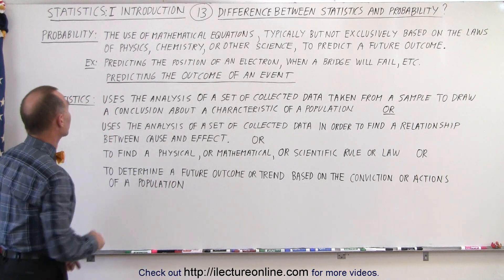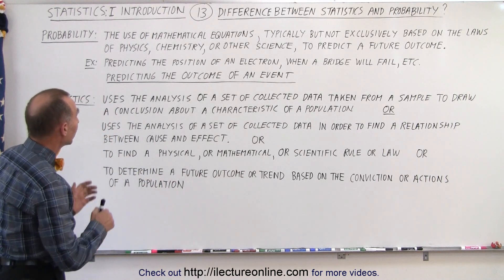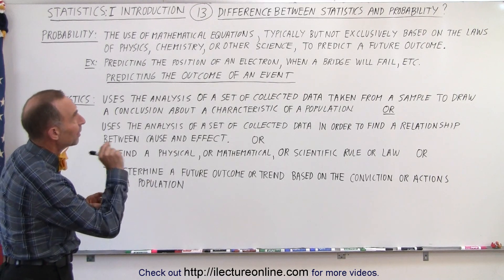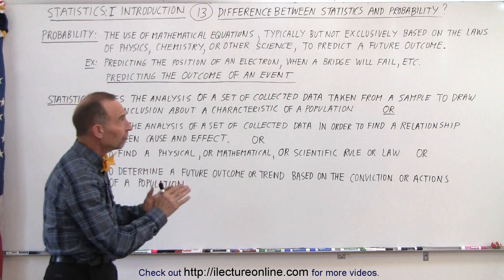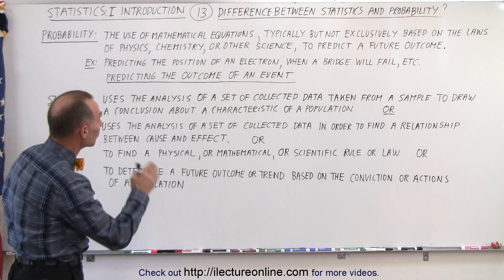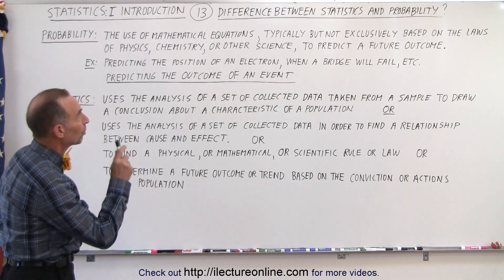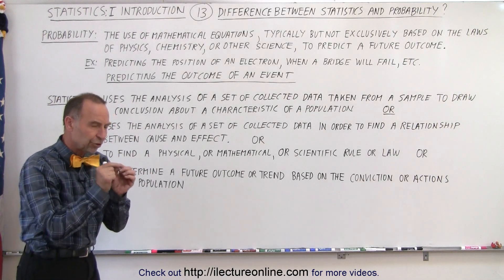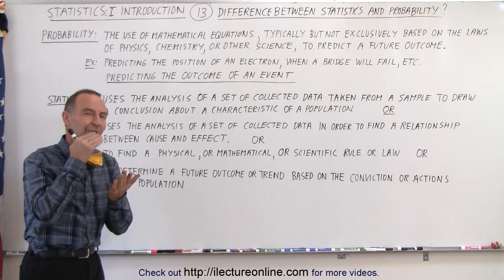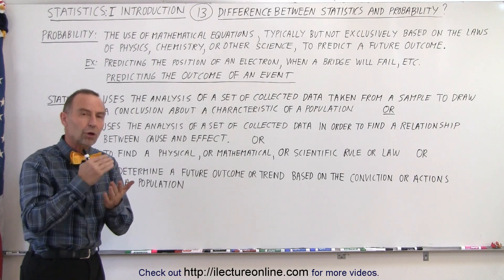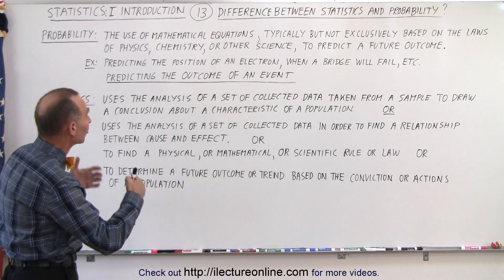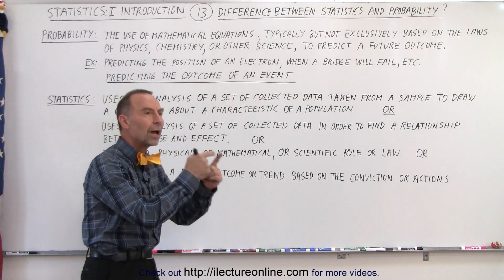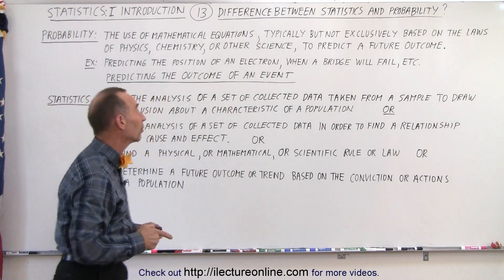Now let's read the definition of probability. It is the use of mathematical equations, typically but not exclusively based on the laws of physics, chemistry, or other sciences, to predict a future outcome. So we're trying to predict the future outcome based on some physical natural law properties in physics or chemistry or other sciences that will then determine what the probable outcome will be of a particular event.